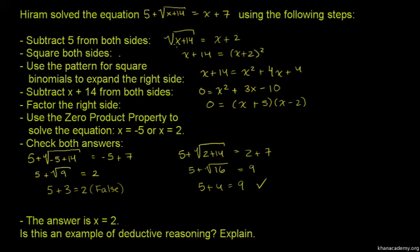After subtracting 5, we square both sides. This gives us x + 14 = (x + 2)².